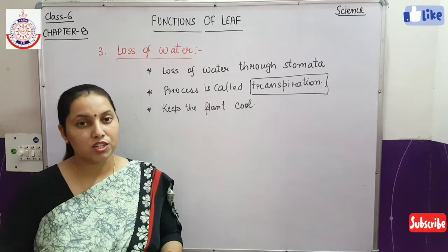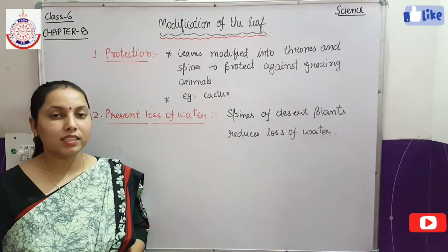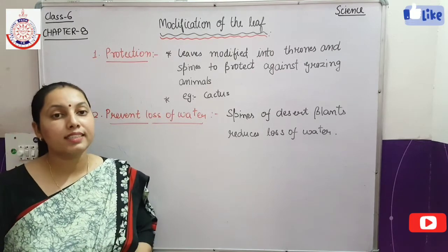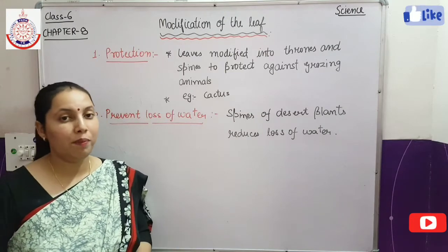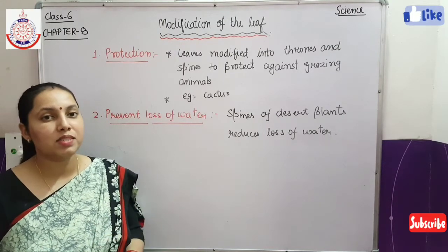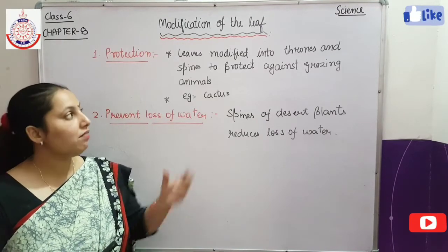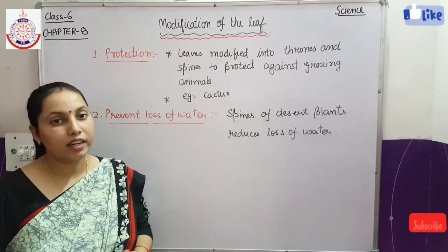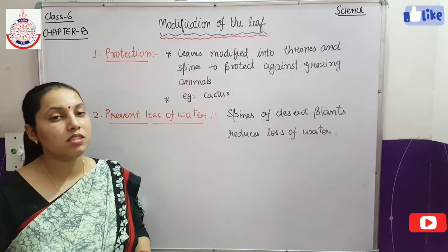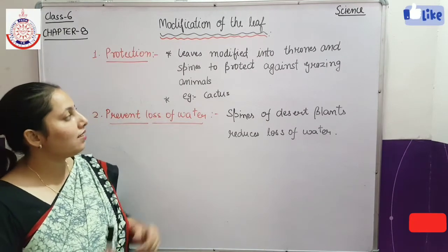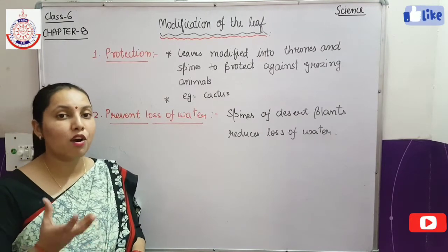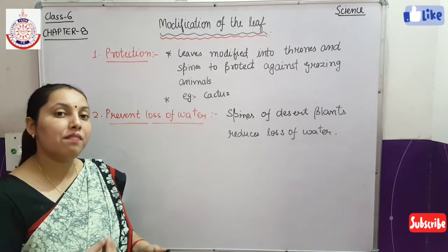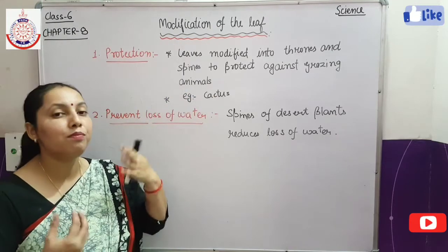We will discuss some modifications of the leaf. The first modification of the leaf is protection. As you know, grazing animals graze the leaves of the plant. So some plants, to protect themselves, turn their leaves into thorns and spines. Whenever these leaves are modified into thorns and spines, it protects against the grazing animals so that the grazing animals can't eat them. The example of this is cactus — the leaves of the cactus have thorns or spines to protect themselves from grazing animals.